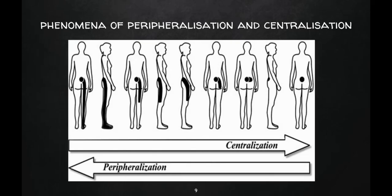Peripheralization and centralization are phenomena seen only in derangement syndrome. Peripheralization means pain starts from the spine and radiates down into the thigh, calf muscle, and sole of the foot. In centralization, symptoms reduce over time — for example, a patient previously having pain in the calf and thigh may after treatment no longer have those symptoms, with only localized spinal symptoms remaining. This phenomenon of centralization and peripheralization is only seen in derangement syndrome.